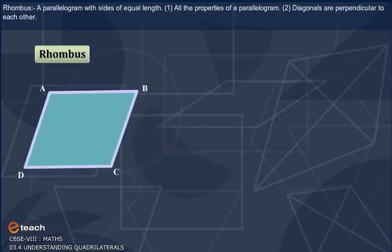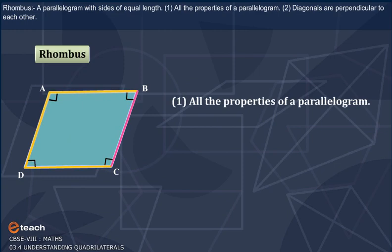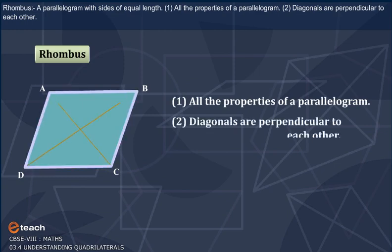Rhombus: A parallelogram with sides of equal length. All the properties of a parallelogram. Diagonals are perpendicular to each other.